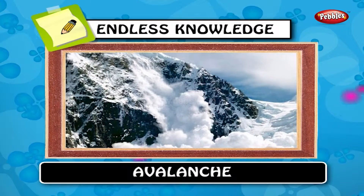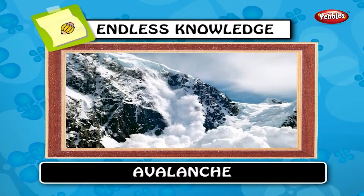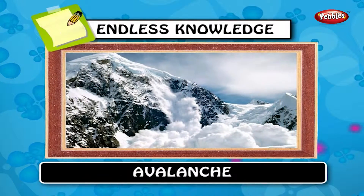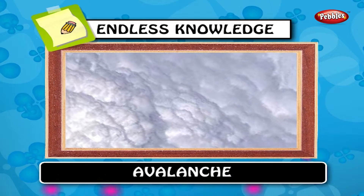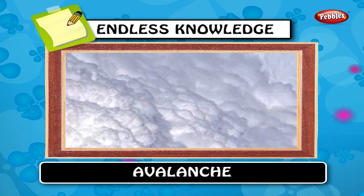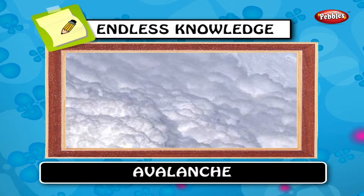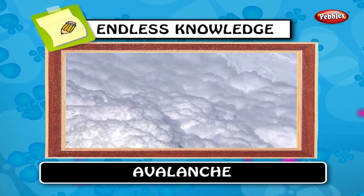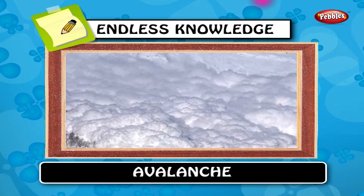Avalanche. An avalanche is a rapid flow of snow down a slope from either natural triggers or human activity, typically occurring in mountainous terrain.